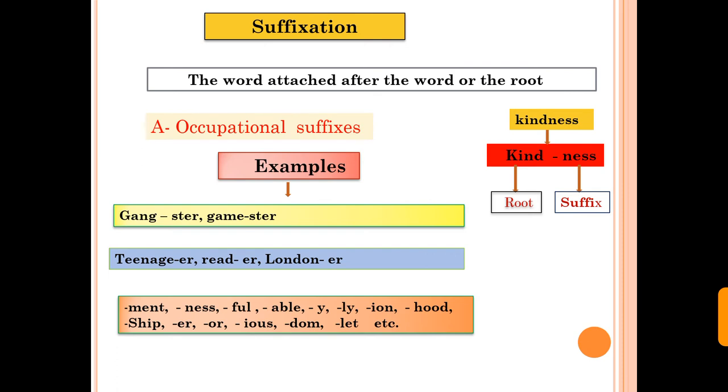The last one process of affixation is suffixation. Suffixation is the word which is attached after the word or the root. After adding the suffixation, the class of word change or may be maintained. The first type is occupational suffix. These are ster and er. Gang, gangster. Teenage, teenager. It may change the class of the word.